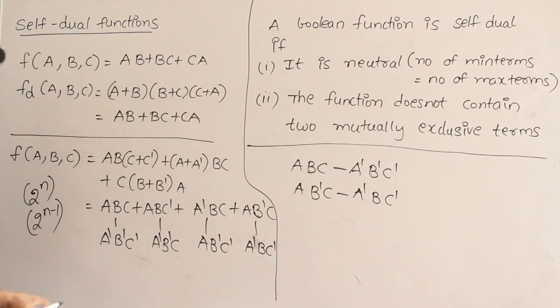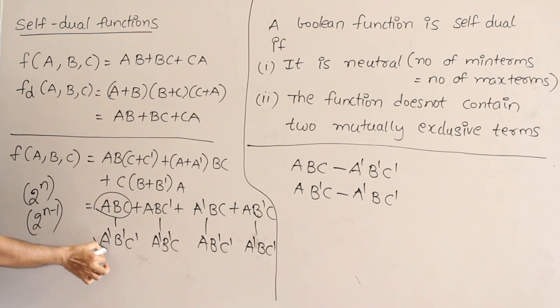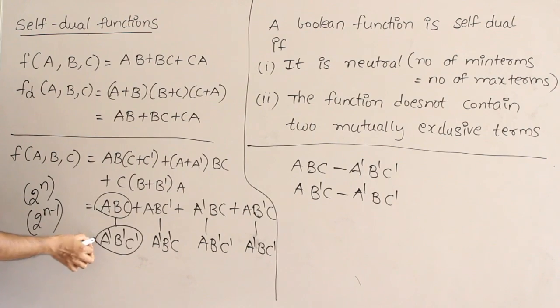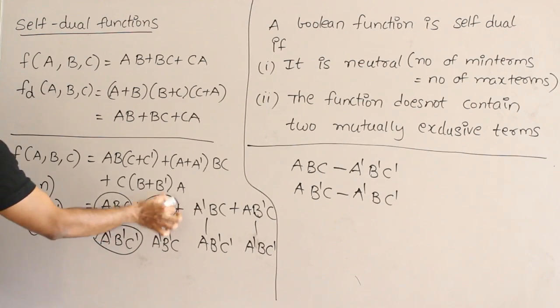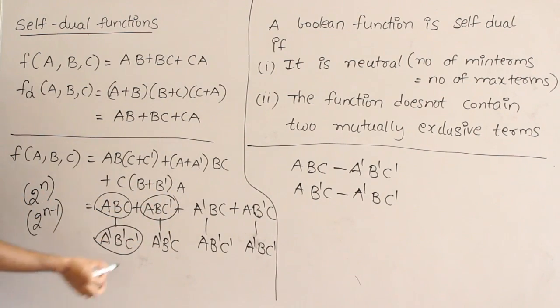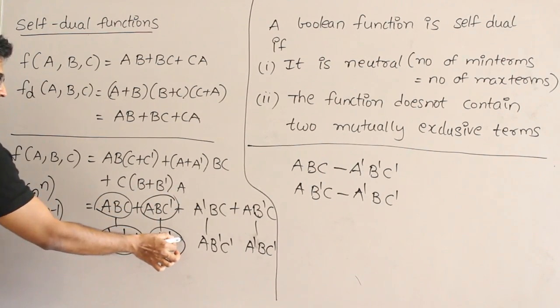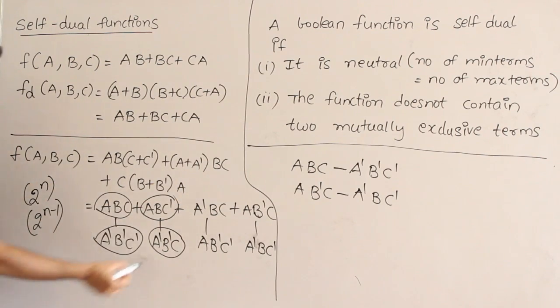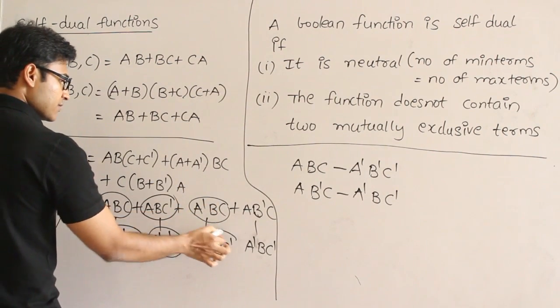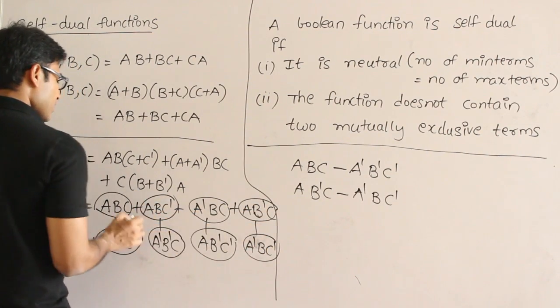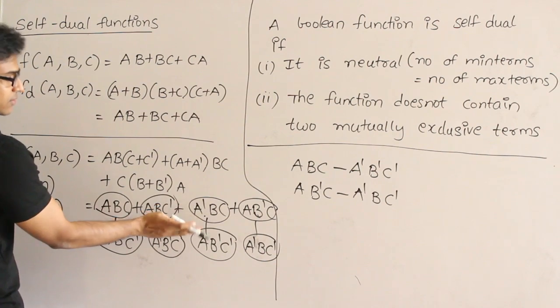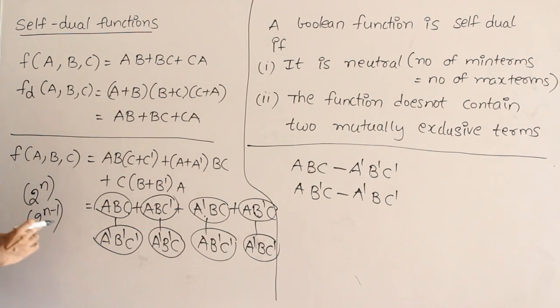Therefore, check this. If ABC is present in the function, then its mutually exclusive term A prime B prime C prime is not present in the function. Check that. Similarly, if ABC prime is present, its mutually exclusive term is A prime B prime C. It is not present in the function. Similarly, if this is present, its mutually exclusive function is not present. So if any term is present in the function, its mutually exclusive term is not definitely present in the function.